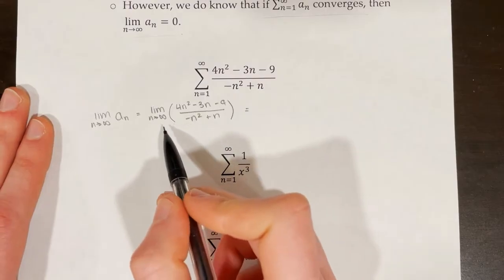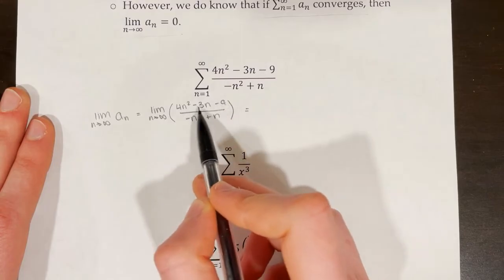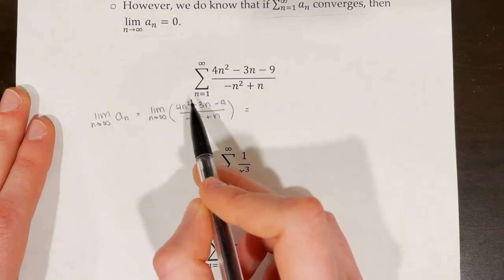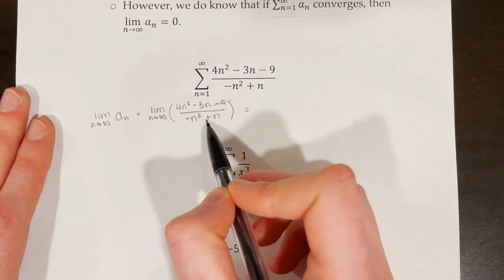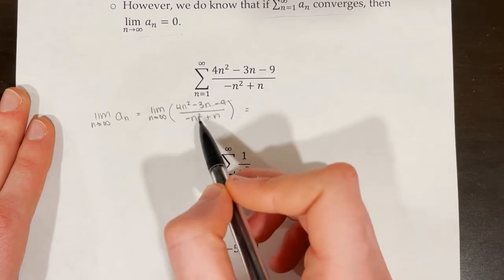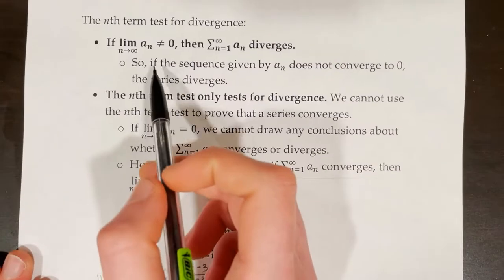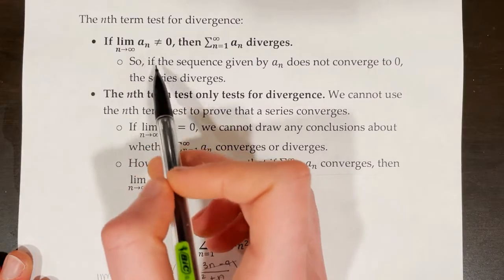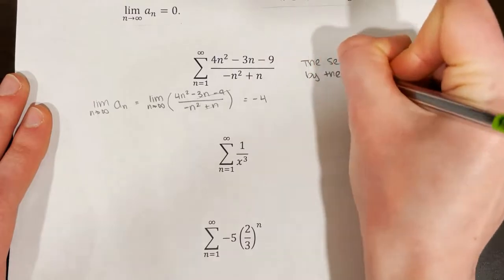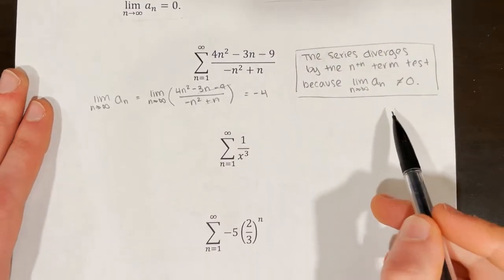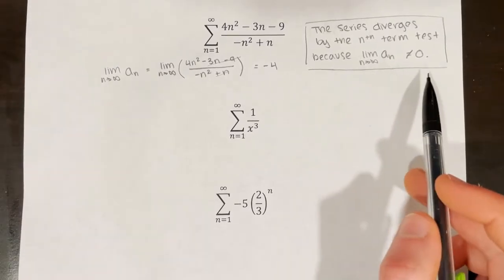Thinking back to our limit properties, if we plug in infinity, the negative 3n and negative 9 become irrelevant because 4n squared dominates the numerator, and negative n squared dominates the denominator. The n squared terms cancel, leaving 4 over negative 1, or negative 4. Since negative 4 is not equal to 0, the series diverges by the nth term test because the limit as n approaches infinity of a sub n is not equal to 0.